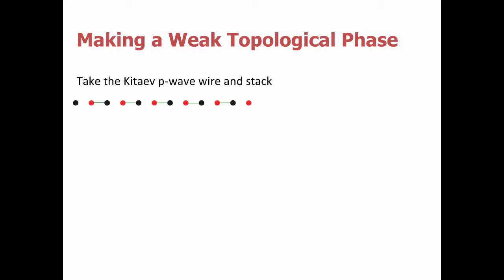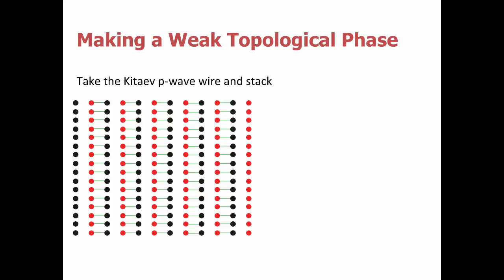Now we're ready to talk about how we might construct a weak topological phase. We do this by beginning with a strong topological phase — in this case the one-dimensional Kitaev P-wave wire, which is a one-dimensional topological superconductor. We can take this system and stack it up into two dimensions, and now we've created a two-dimensional weak topological superconductor. This system still has edge states, just like the two-dimensional strong topological superconductor, but in this case the edge states are anisotropic.